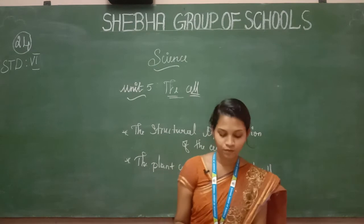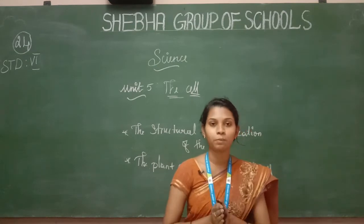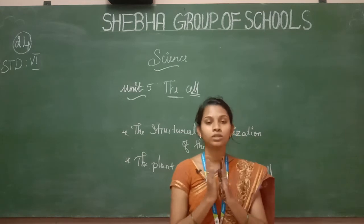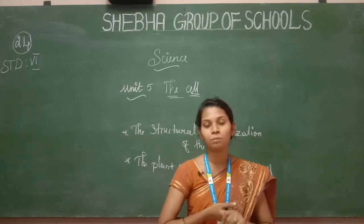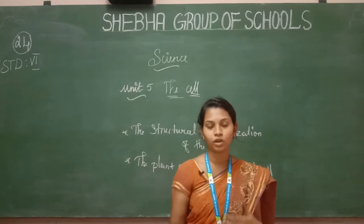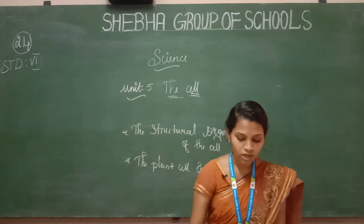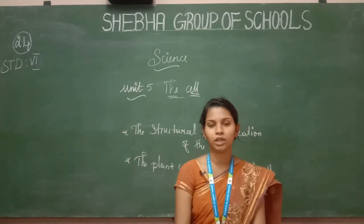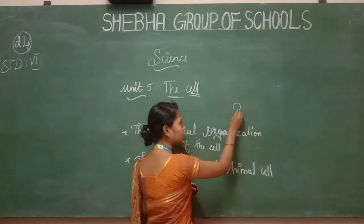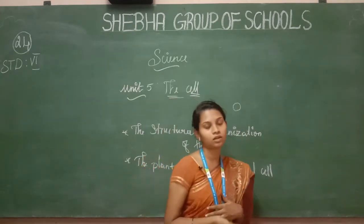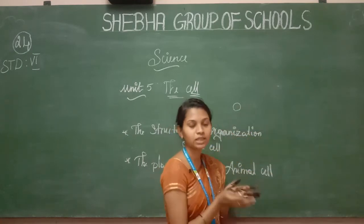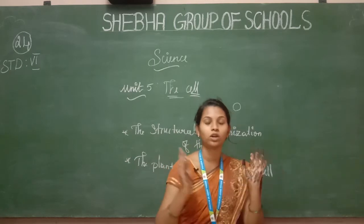The cell is the basic unit. One or two cells are made up of tissue, and tissue forms organs. So the cell is the basic building block for an organism.